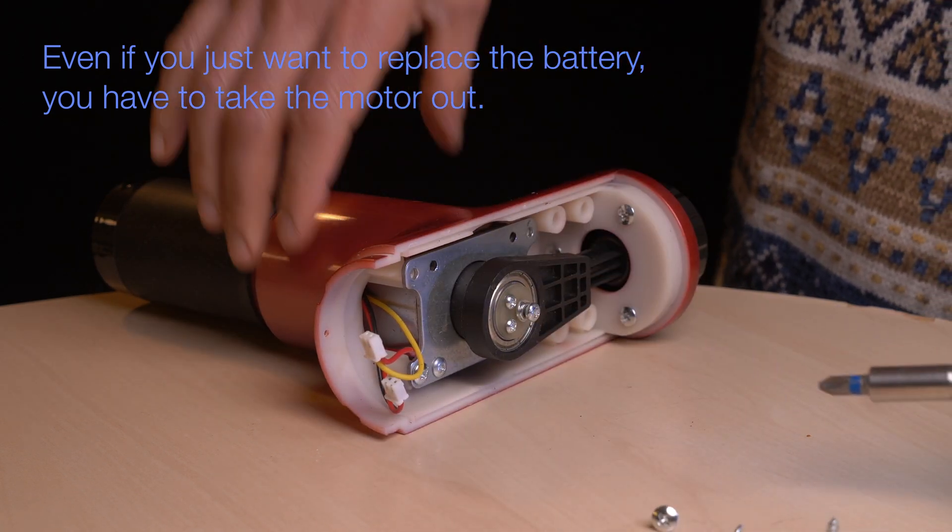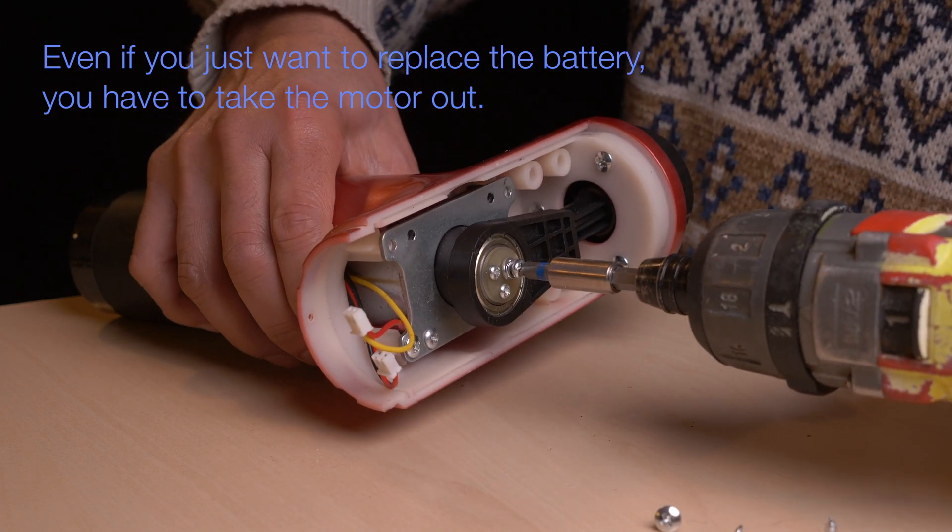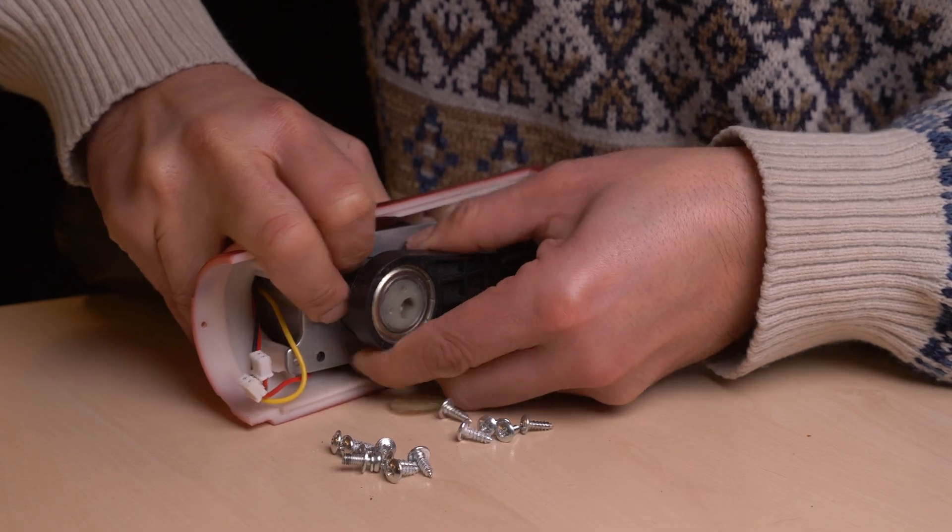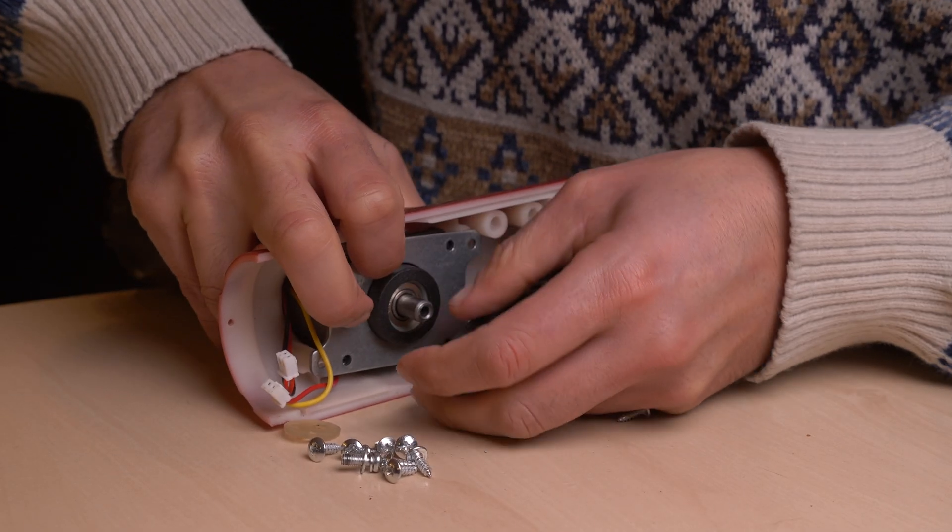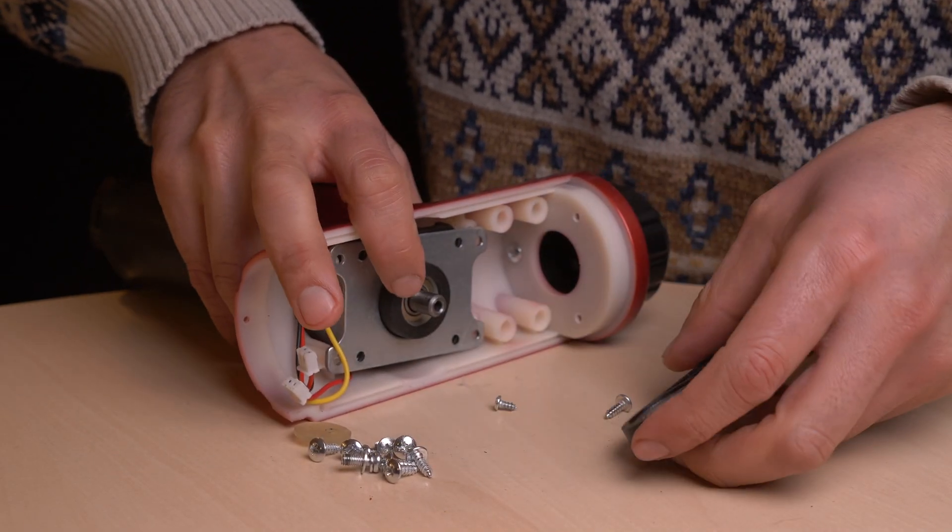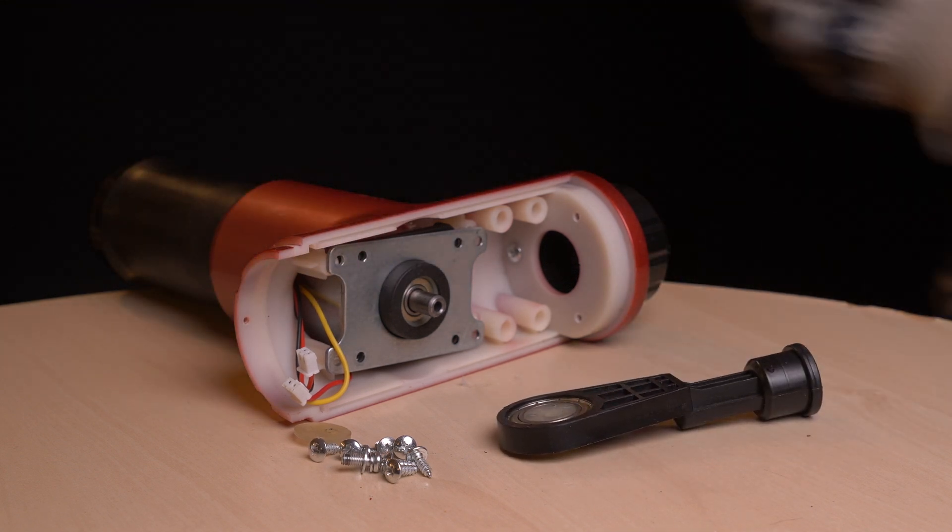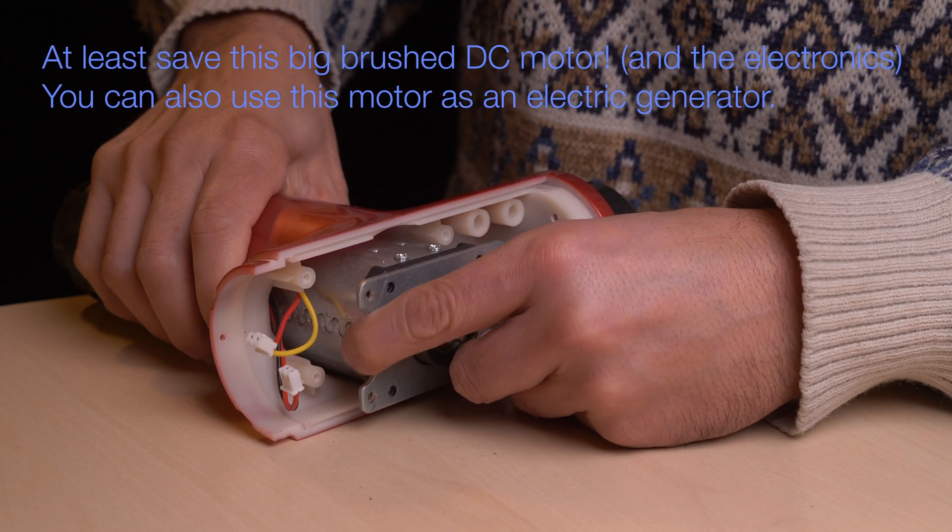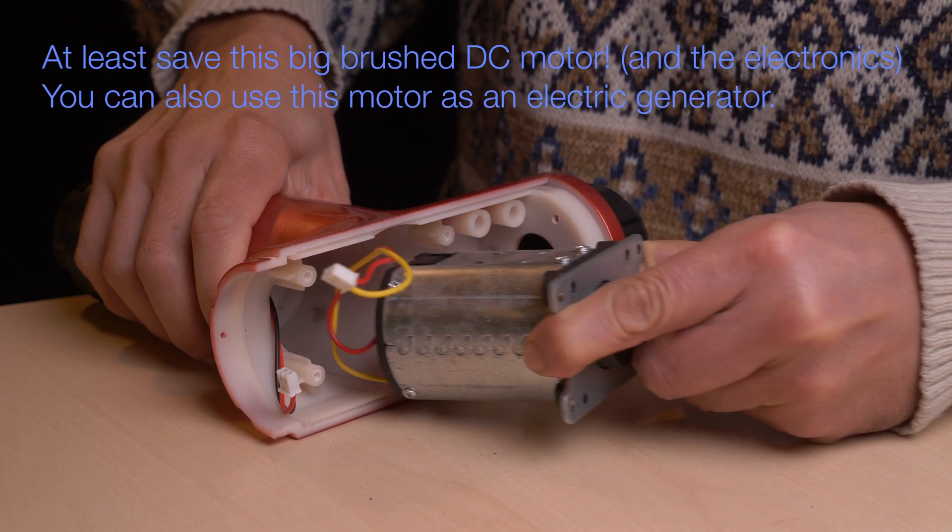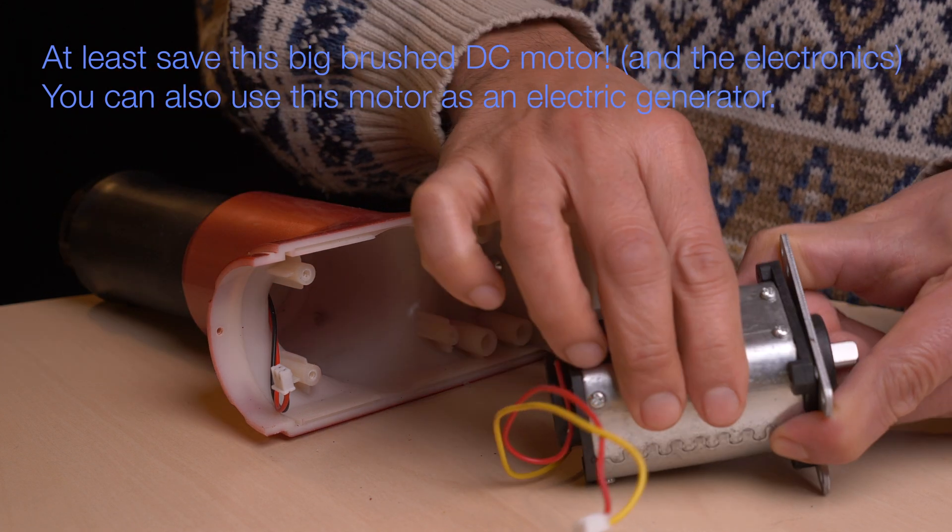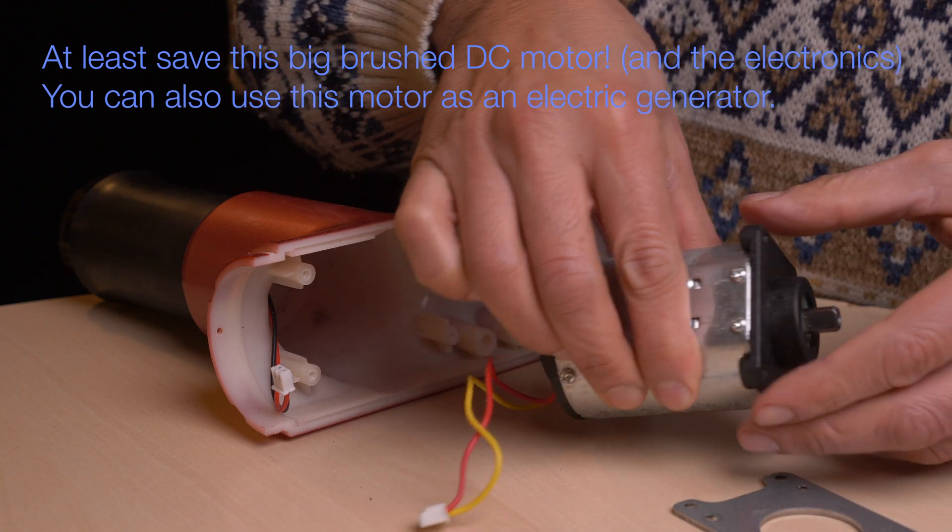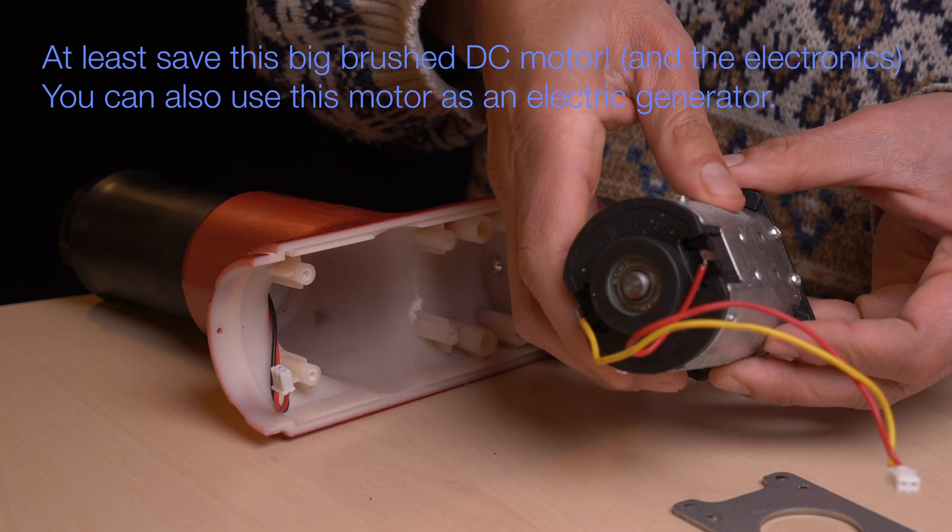So, you have to take out the motor to get to the battery. It's a bit of a struggle to get the rod off, but it's possible. I say, wow, that's a really nice motor. It's a brushed DC motor. Yeah, if you ever find a broken massage gun, get the motor out. And the electronics.